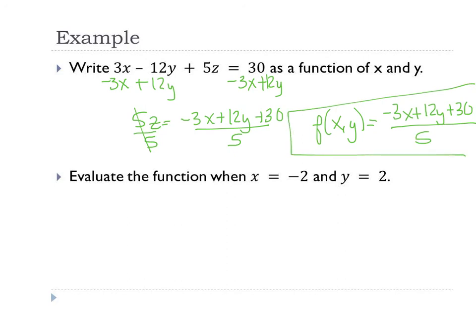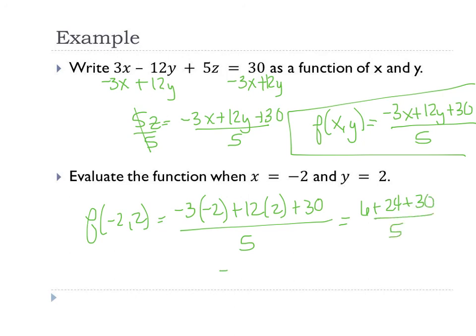And then you're going to evaluate, so this is going to be f(-2, 2). It's going to be -3 times -2 plus 12 times positive 2 plus 30 all over 5. 6 plus 24 plus 30. So 30 plus 30 is 60 divided by 5 would be 12, possibly. There we go.